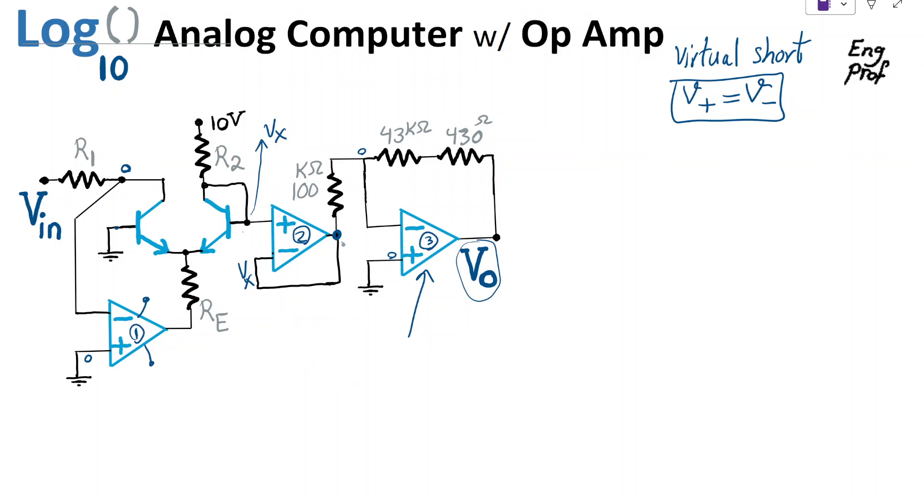Now that we know this node is Vx at the base of this BJT transistor number 2, let's say this is T2, and this is transistor 1 bipolar junction transistor T1. These have a base emitter voltage VBE2 and base emitter voltage VBE1 for the first transistor.